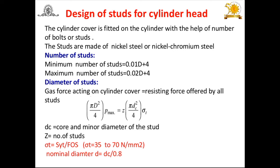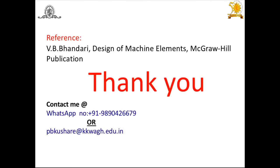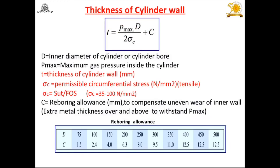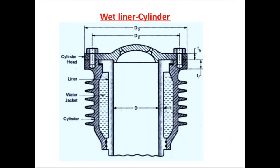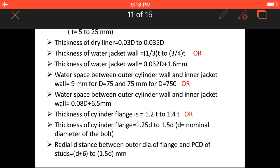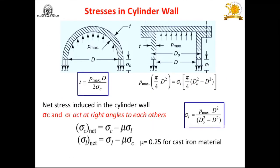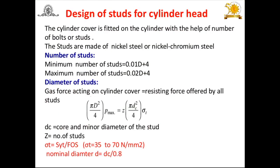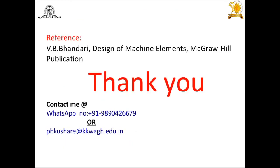In summary, this session covered the design of IC engine cylinders and cylinder liners, including: bore and length of cylinder, empirical relations for various dimensions, stresses induced in the cylinder wall (circumferential and longitudinal), thickness of cylinder head, and the number, nominal diameter, and pitch of studs used to fit the cylinder head.